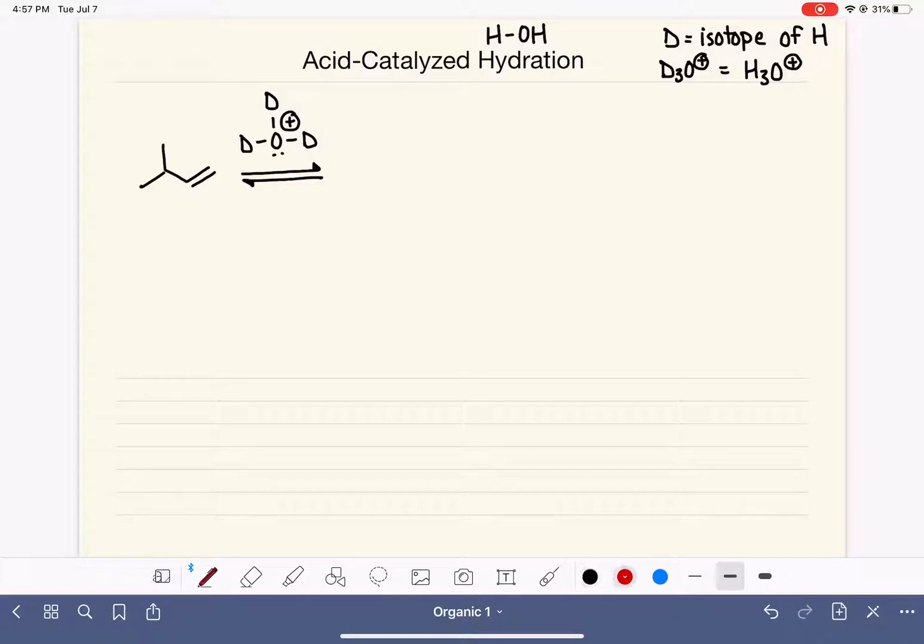And this mechanism is very similar to the hydrohalogenation mechanism. We're going to start by the electrons in the double bond reaching out and attacking any one of the hydrogens or deuteriums. The double bond is going to grab one of those atoms, and that is going to cause the hydrogen-oxygen bond to break, or the deuterium-oxygen bond to break.